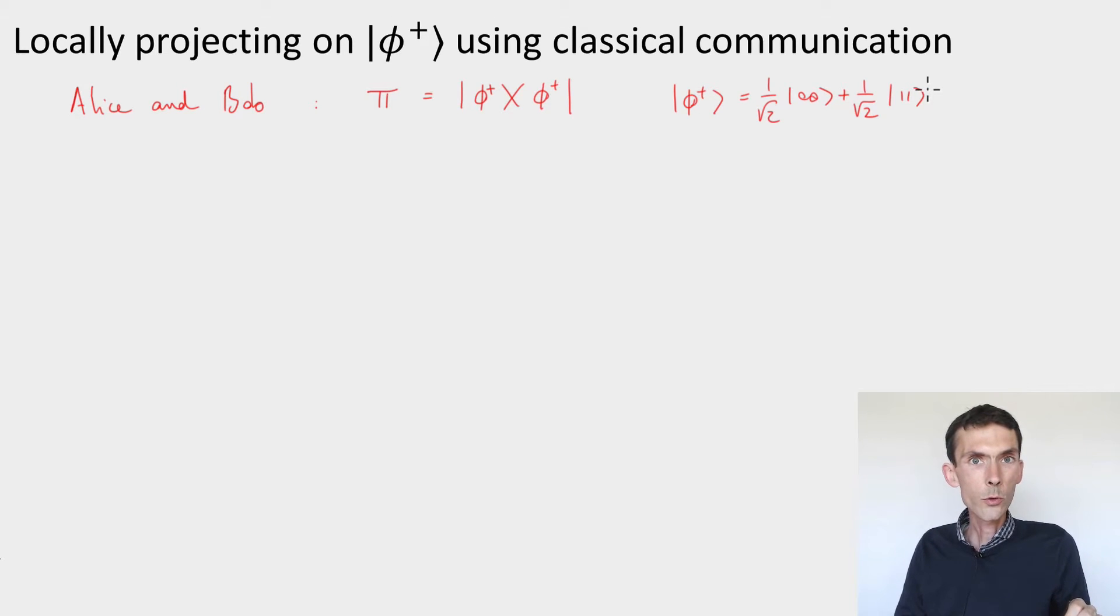And we said, look, if you want to do this, you can decompose it into two different projections. There was projection A, which we can call π_A, and that would be the projection on |φ⁺⟩ and |φ_A⟩, where the state |φ_A⟩ is 1/√2 |0,1⟩ plus 1/√2 |1